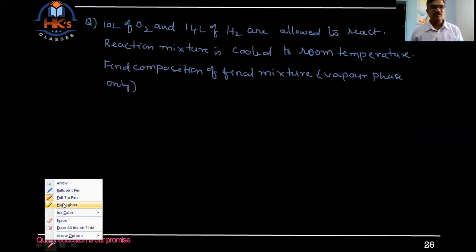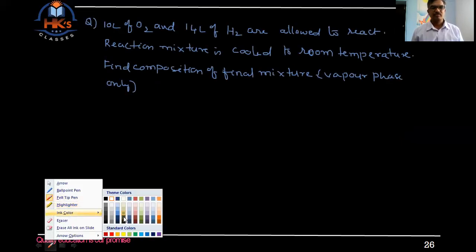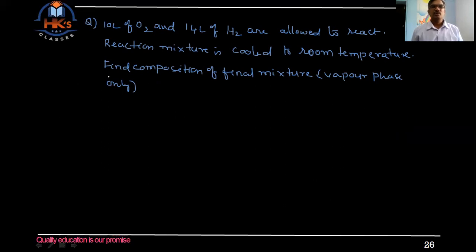Let us solve some questions. Question number one: 10 liters of oxygen and 14 liters of hydrogen are allowed to react. The reaction mixture is cooled to room temperature. Find the composition of the final mixture in the vapor phase only.